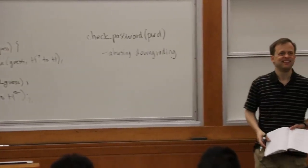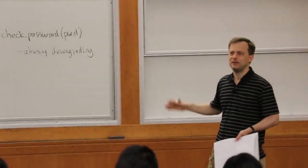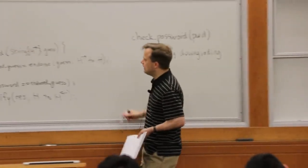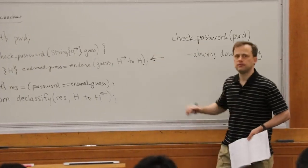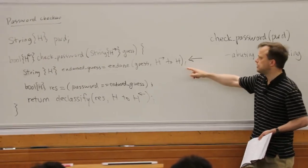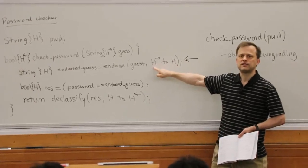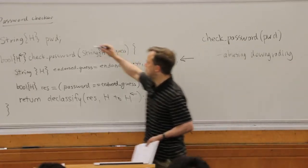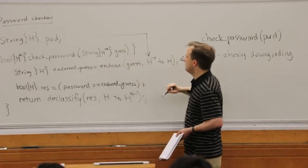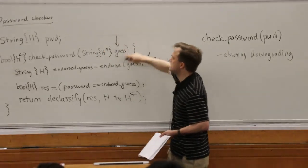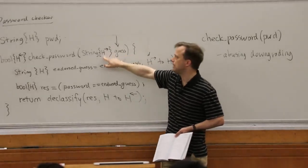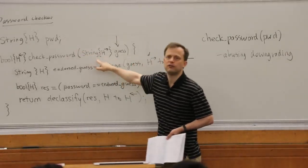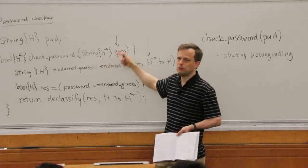So where does the fault lie? I think the problem lies right here: we did an endorsement of information that was secret and not trusted. Because it was secret, it's perfectly okay by the rules of secure information flow for the password to be sent in as the guess. We can send the password in as the guess because this only requires confidentiality — it has all the confidentiality this needs, and it's okay to send trusted information into an untrusted variable. So the information flow rules say it's okay.